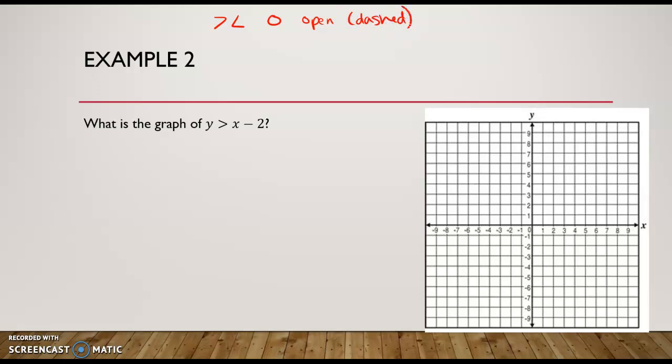I like to use the word open, because we think of it as an open circle, as opposed to a closed. That's how I think of it. It's a dashed line. And then if we have the equal to, where we used to fill in our circle and called it a closed circle, we're going to draw a solid line.